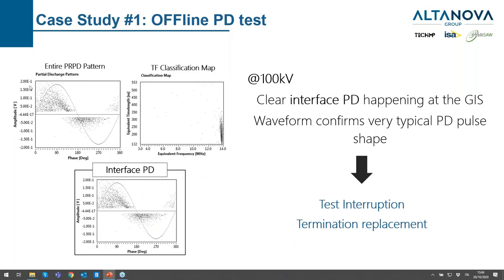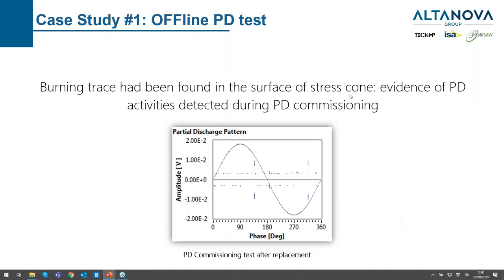At 100 kV, both the amplitude and repetition rate of the PD were even more evident. For the briefing: there was a PD in that termination. The test was interrupted and the GIS termination was replaced. Burning traces were found on the stress cone of the termination — it was confirmed PD activity.